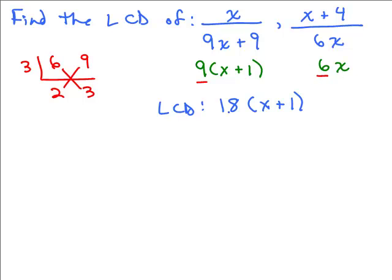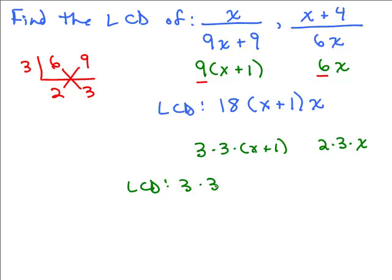Now I look at the second denominator. I already have my 6 because 6 goes into 18, and I need a factor of X. Make sure you don't think X is the same as X plus 1 — it's a different factor. For instance, pick some number, add 1 to it: they're two different numbers. So the LCD is 18 times (X plus 1) times X. Alternatively, if you break 9 down to 3 times 3 times (X plus 1) and 6 to 2 times 3 times X, and build up, you'd add the 2 and the X to what's already there, giving you 3 times 3 times 2 = 18, with X and (X plus 1) — same result.